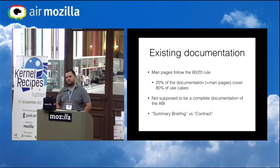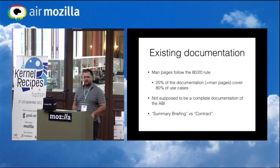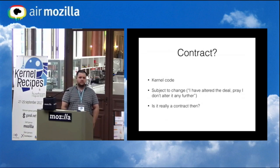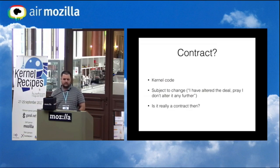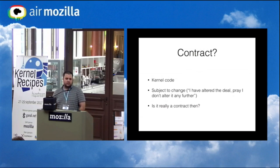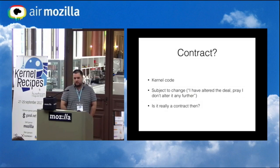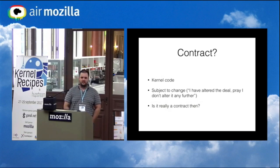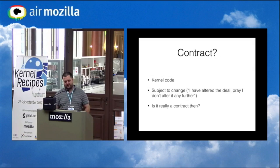Man pages are really just scratching the surface — they're a summary briefing, not a contract. We need a contract between user space and kernel space saying what the kernel will do given a request. Right now that contract is in the form of kernel code. If you want to know what happens when you pass O_DIRECTORY and O_CREAT together, you have to poke at the kernel code. That's all subject to change, and there's no kernel ABI police to enforce it — it's not really a contract.